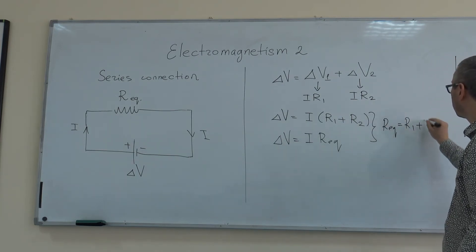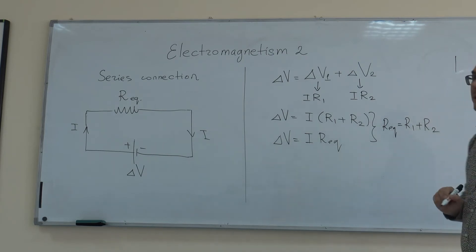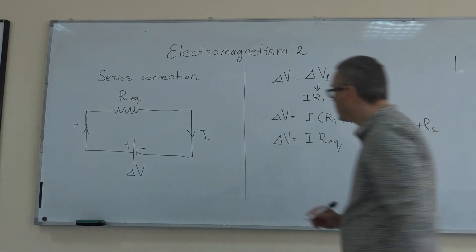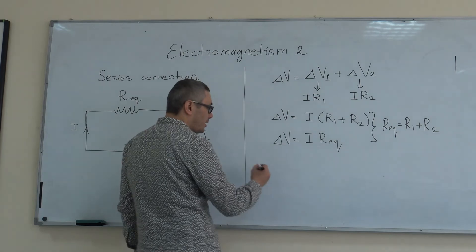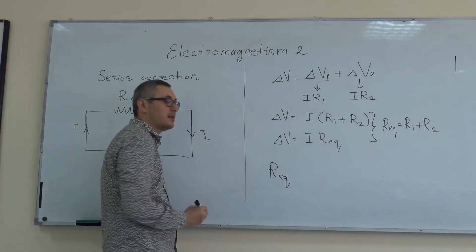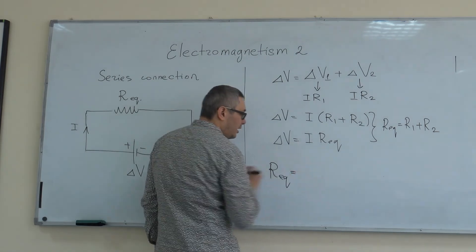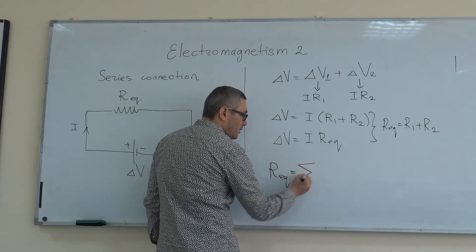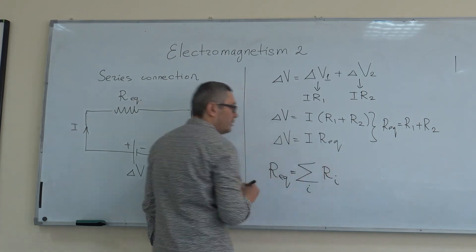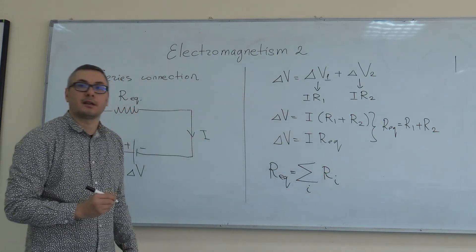Now you don't have to have only two resistors. You can have several resistors connected in series. You can write a general expression: when resistors are connected in series, the equivalent resistance is simply the sum of all the resistances connected in series.